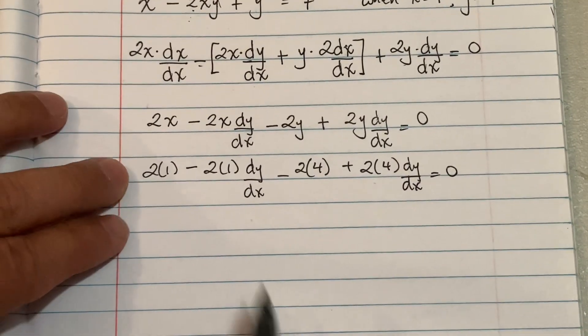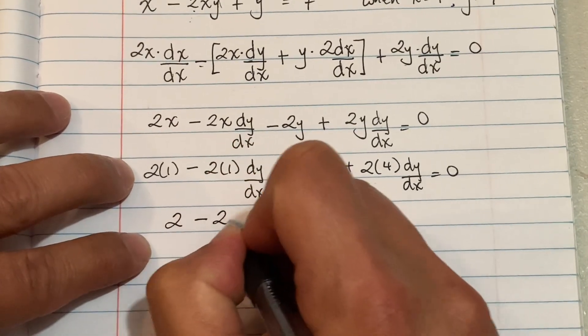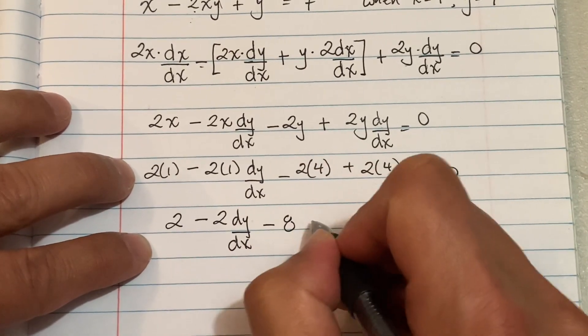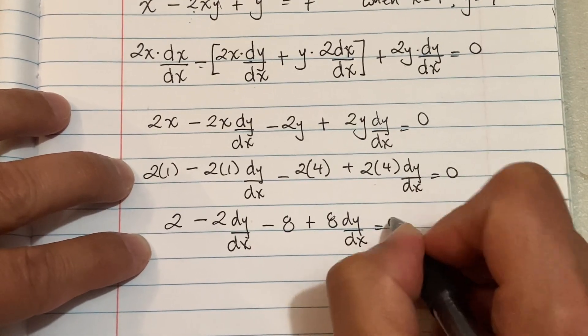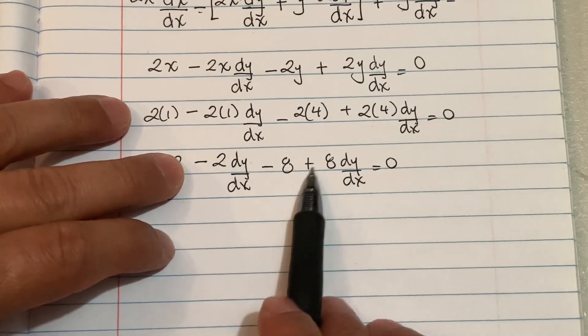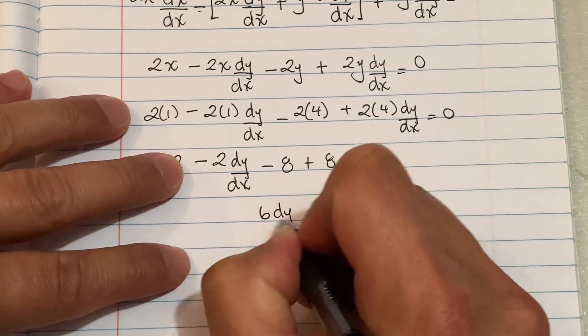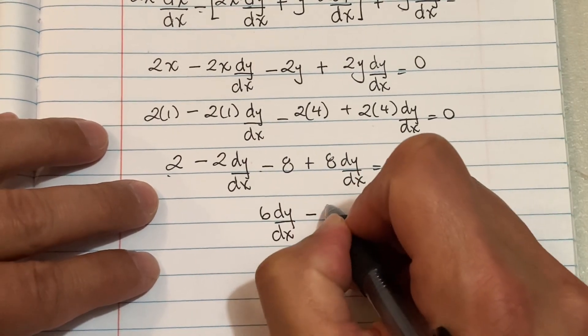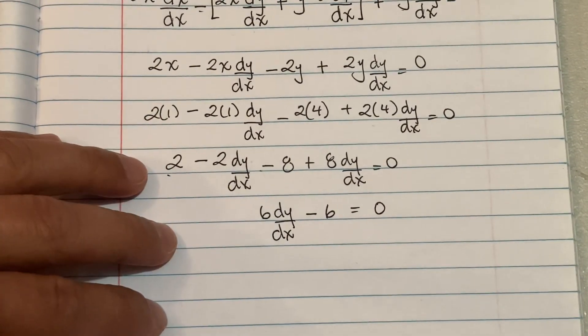Let's see what we can clean up now that we're dealing with numbers. That's gonna give me a 2, that's gonna give me a 2, so we're gonna have 2 minus 2 dy/dx, then minus 8 plus 8 dy/dx. We're gonna combine our dy/dx's together, so you have negative 2 dy/dx plus 8 dy/dx—that's gonna give me 6 dy/dx. And then 2 minus 8 is gonna give me negative 6, and that's gonna equal 0.